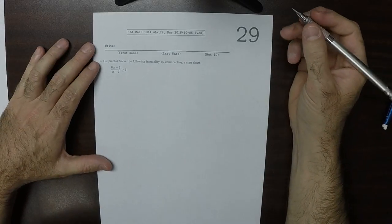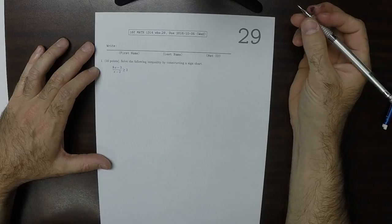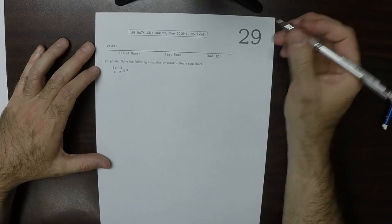This is the solution to written homework 29. Solve the following inequality by constructing a sign chart.